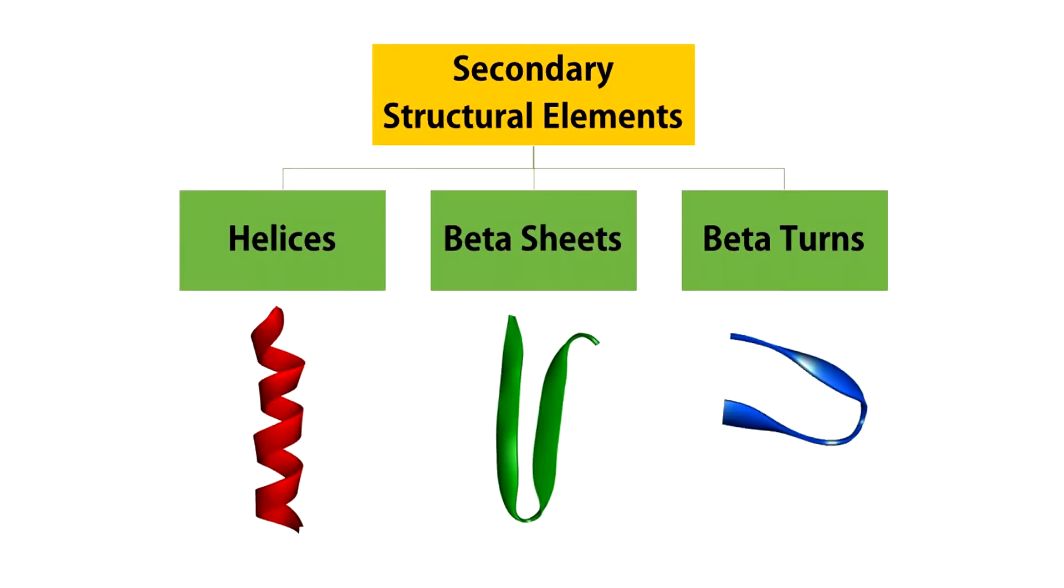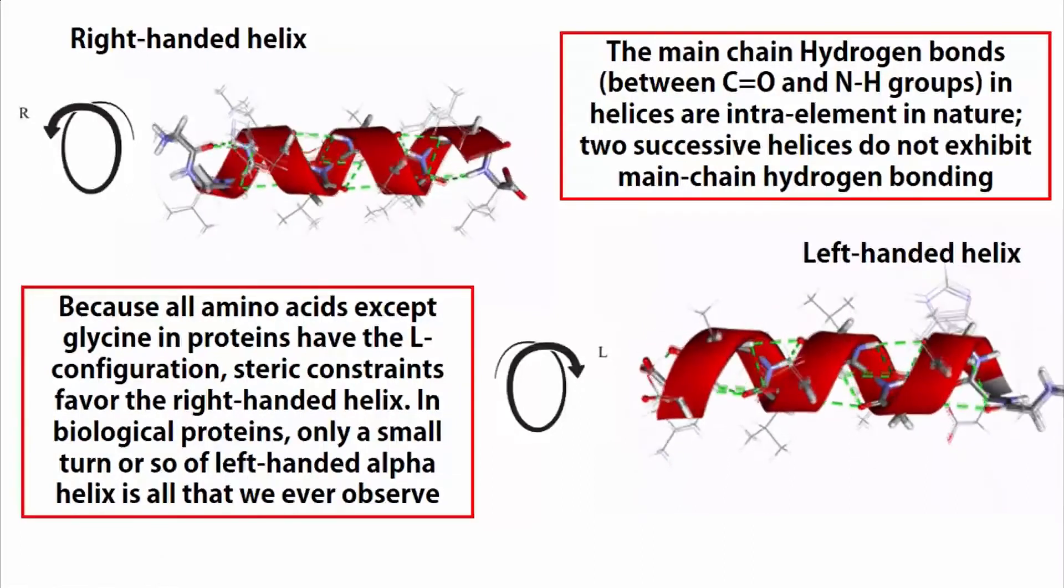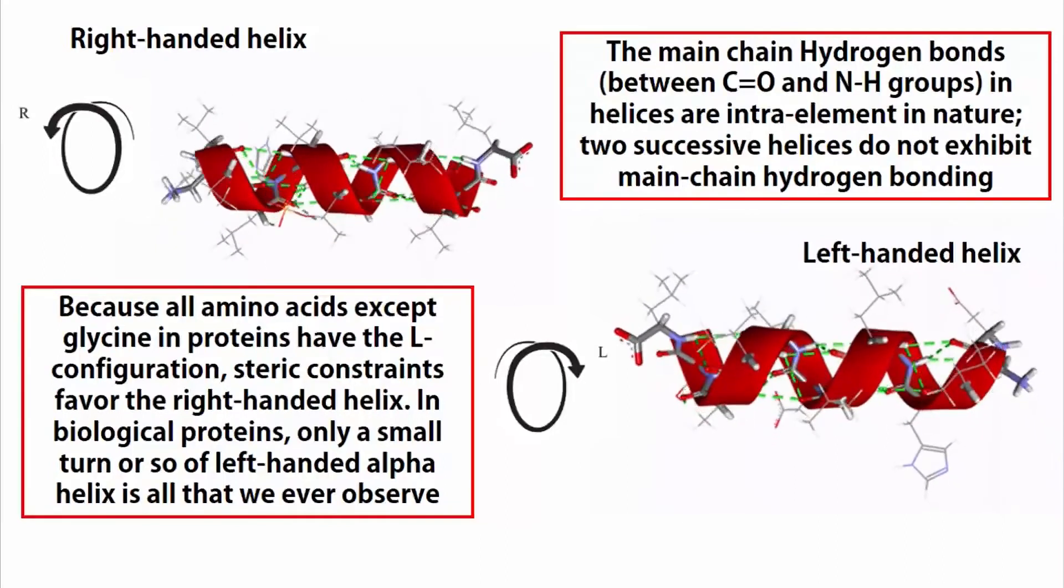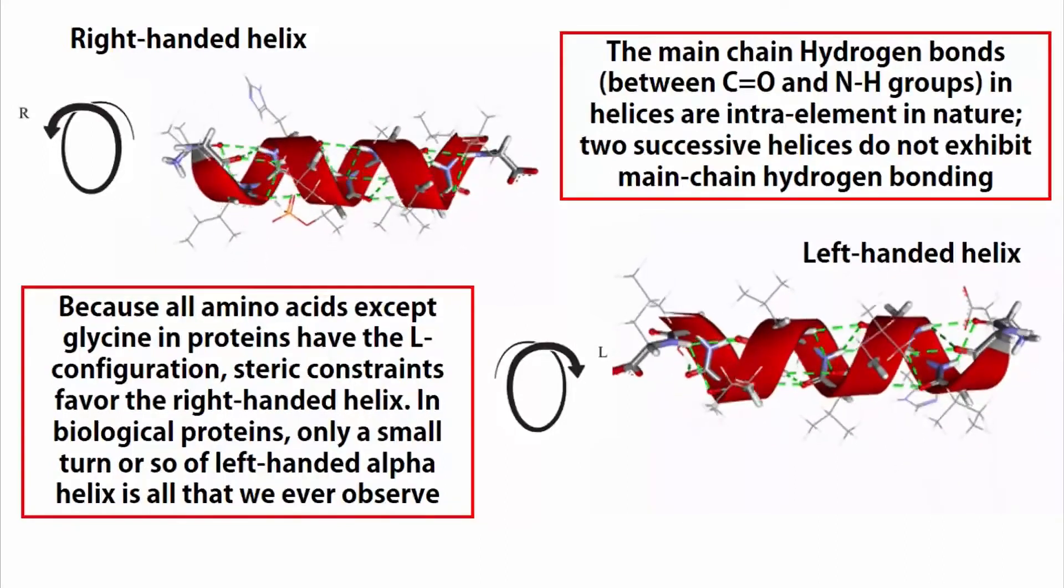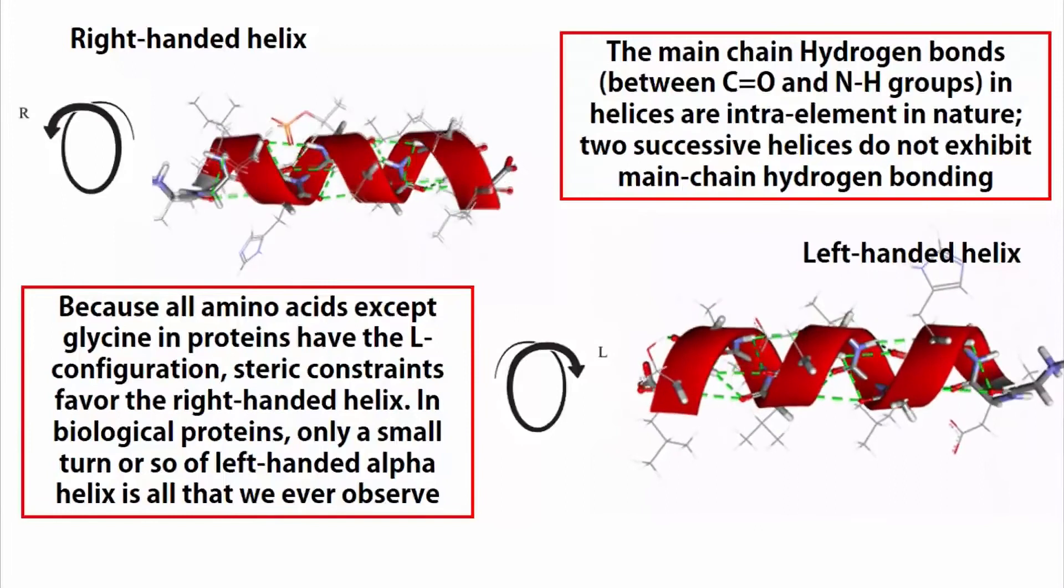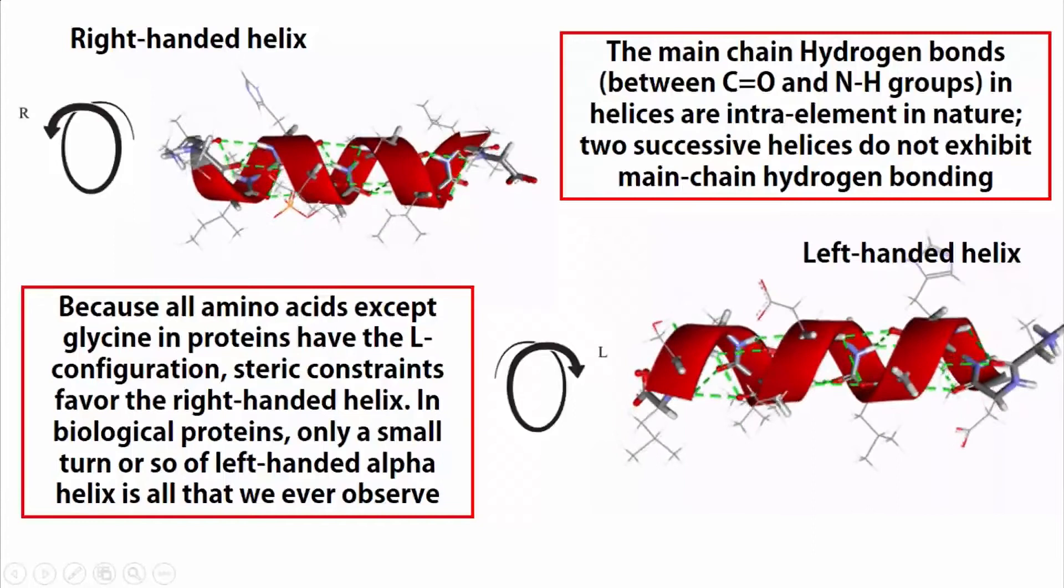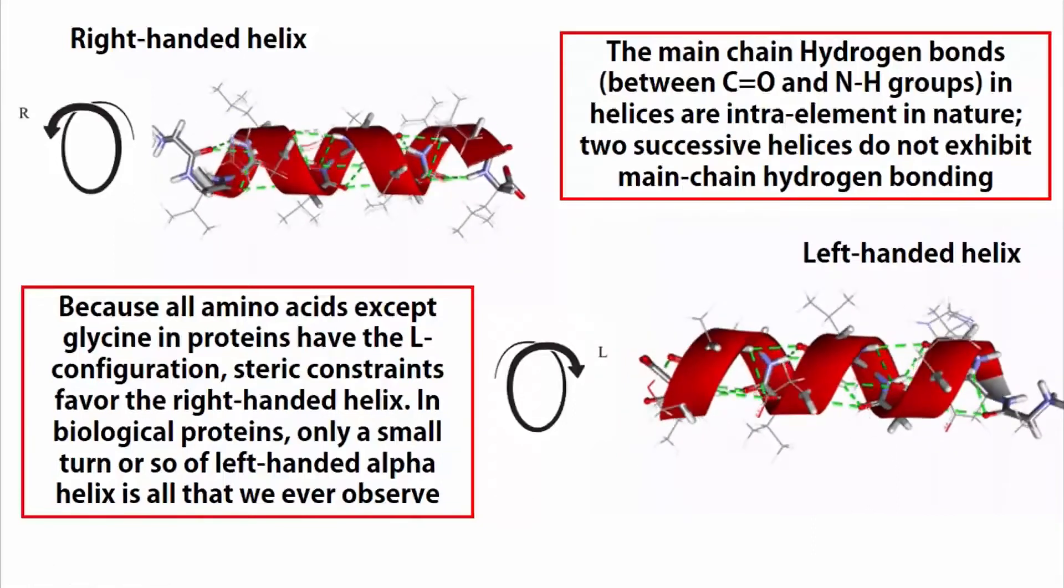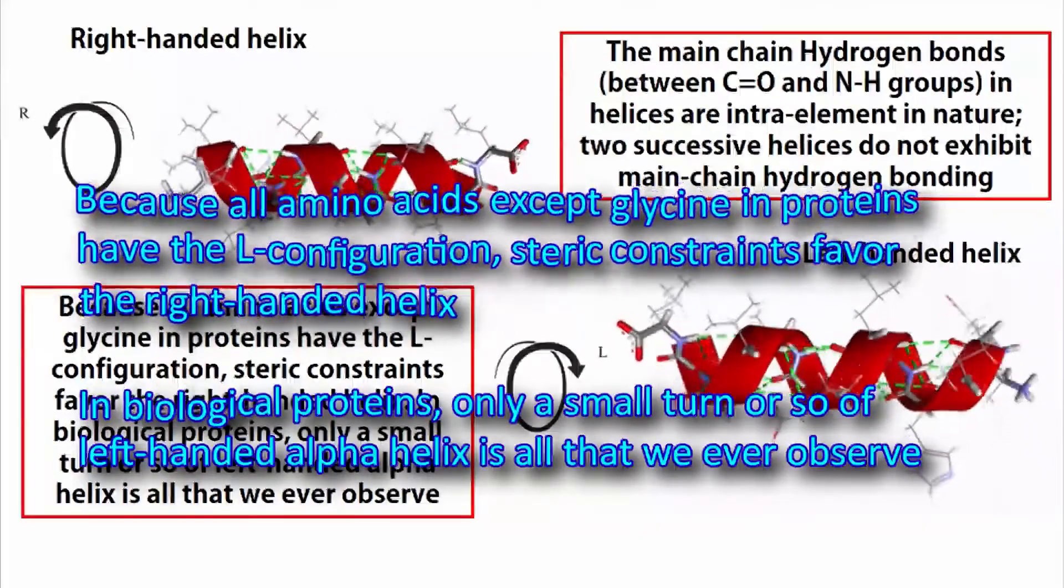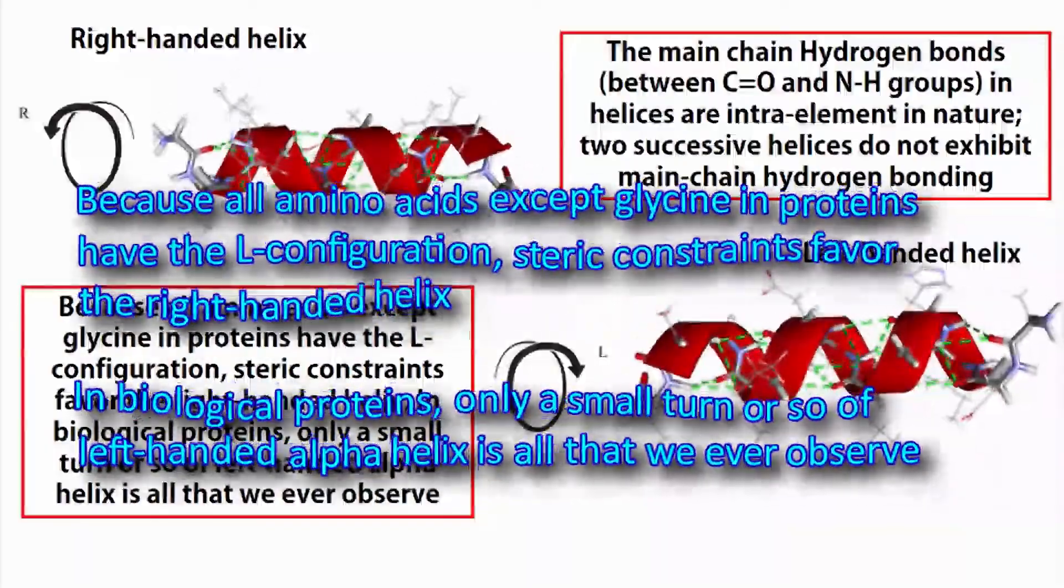Let us start with helices. If a polypeptide chain is twisted by the same amount about each of its C-alpha atoms, it assumes a helical conformation. The main chain hydrogen bonding patterns in helices are intra-element in nature, meaning two neighboring helices never exhibit any main chain hydrogen bonding. Alpha helices can be right-handed or clockwise, or they can be left-handed and counter-clockwise. But because all amino acids, except glycine in proteins, have the L-configuration, static constraints favor the right-handed helix.